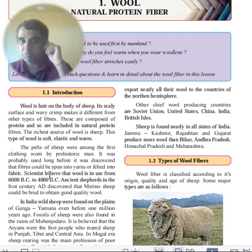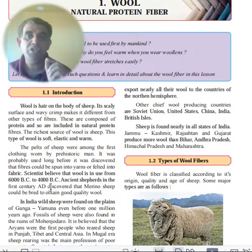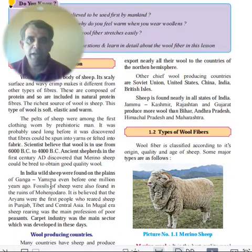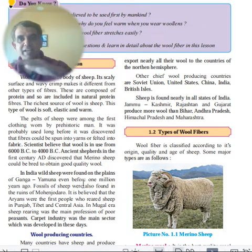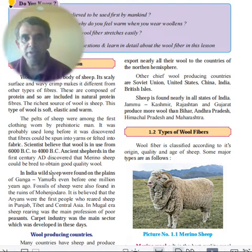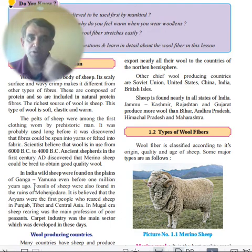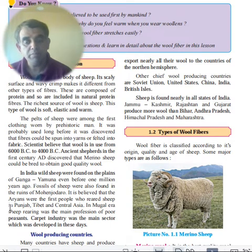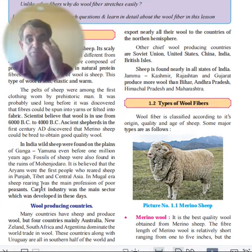The merino sheep was discovered to have excellent quality wool. In India, sheep are found in the Ganga-Yamuna plains. Fossils from Mohenjo-daro suggest sheep were present even earlier. Aryans were the first people to rear sheep for wool in Punjab, Tibet, and Central Asia — cold, hilly areas. In the Mughal era, sheep rearing was a main profession of poor peasants.